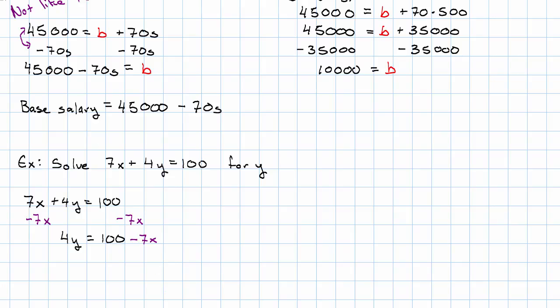Now the only thing keeping Y from being by itself is the 4. So we'll divide both sides by 4. Important to remember, notice that when we have the two terms on the right-hand side, we have to divide both of them by 4.